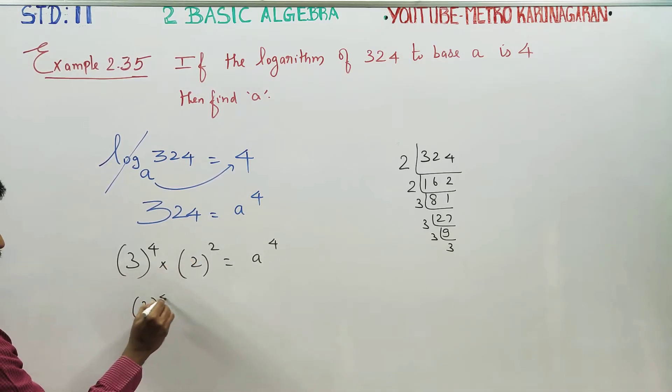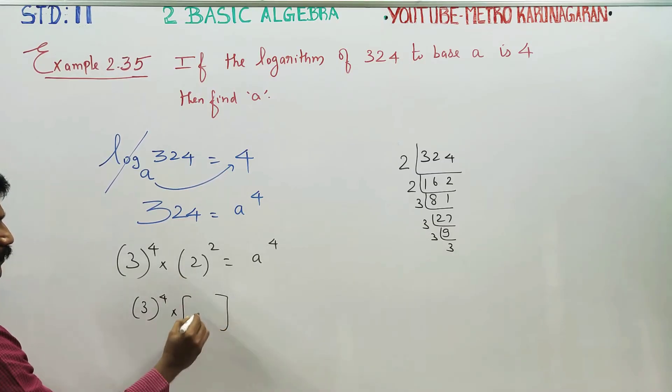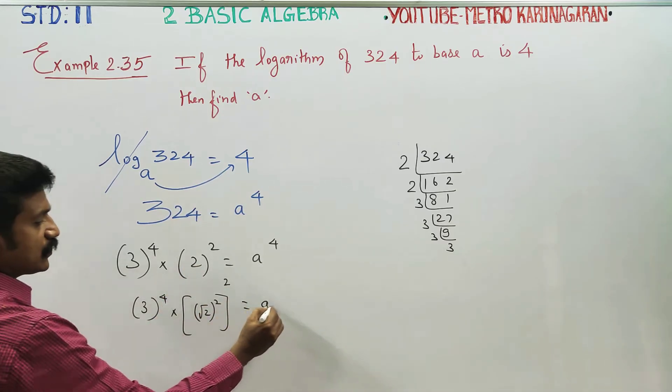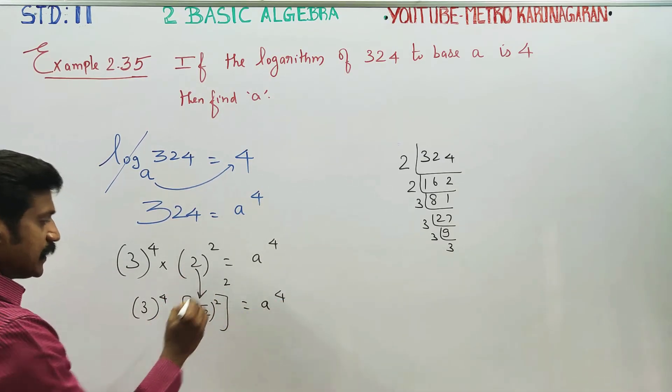If you disturb the result, 2 can be written as root 2 whole square. Am I right? Root 2 whole square. 2 now, power 2 is equal to A power 4.